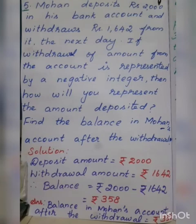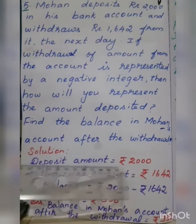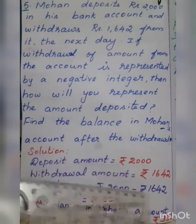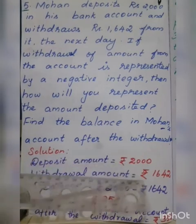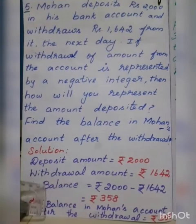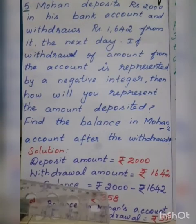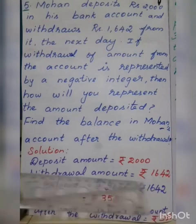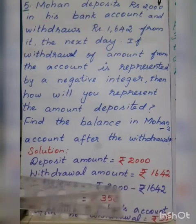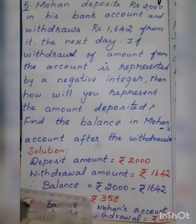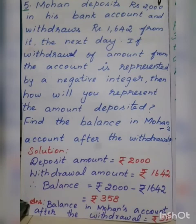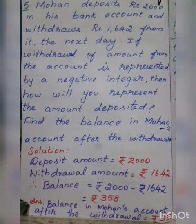Solution: deposit amount rupees 2000 is positive, and withdraw amount rupees 1642 is a negative integer. The balance is rupees 2000 minus rupees 1642. Subtract the two numbers to find the balance. The answer is rupees 358. The balance in Mohan's account after the withdrawal is rupees 358.